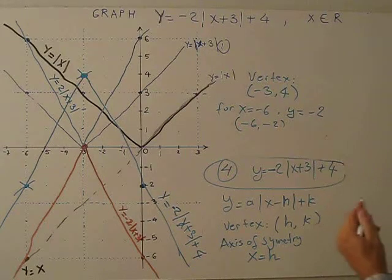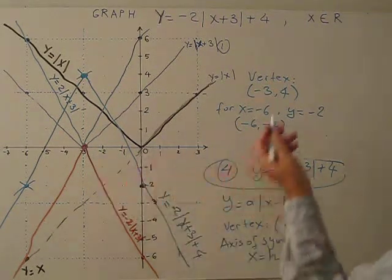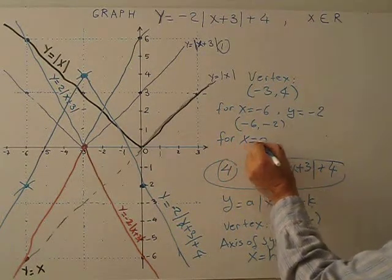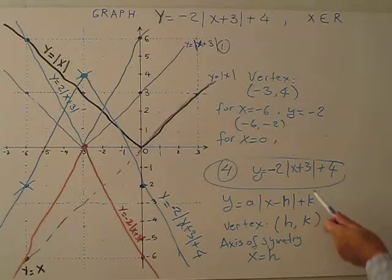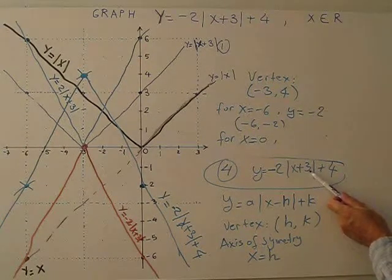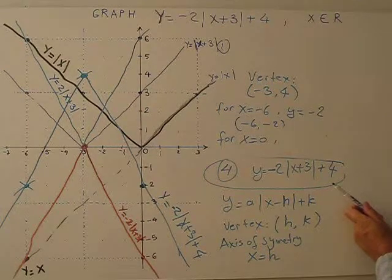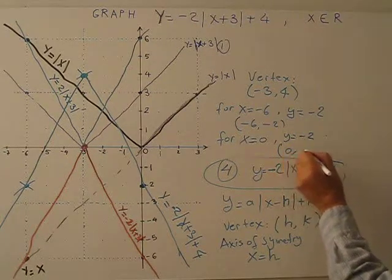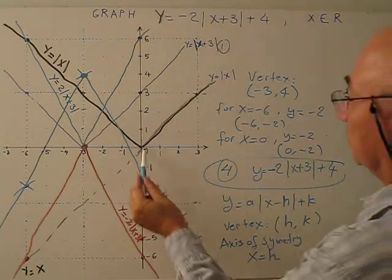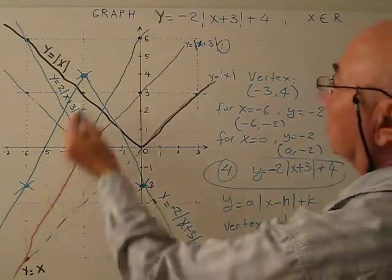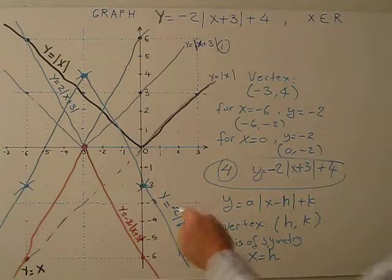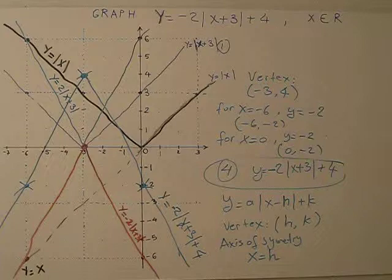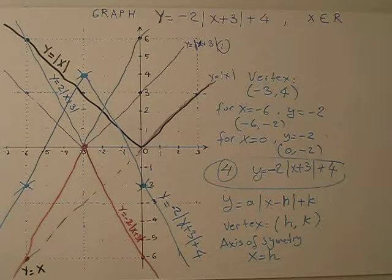Let's also substitute X equals 0, which is an easy value. 0 plus 3 is 3, times negative 2 is negative 6, plus 4 gives negative 2. So another point is (0, negative 2). We now have three points we can connect. The step-by-step method is easy, and mathematicians should always choose the easy method. Thank you very much.